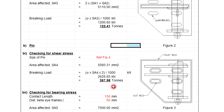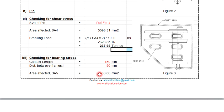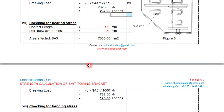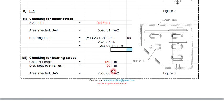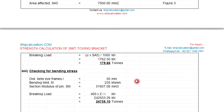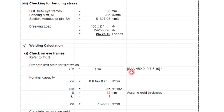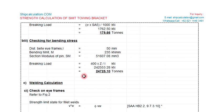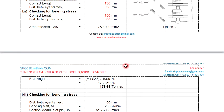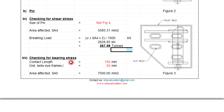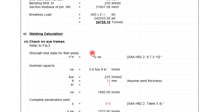After that, you will get the bearing stress check — the contact on the pin — around 179.666 tons. After that, you also check the bending stress, and the shear stress is also required to be checked.